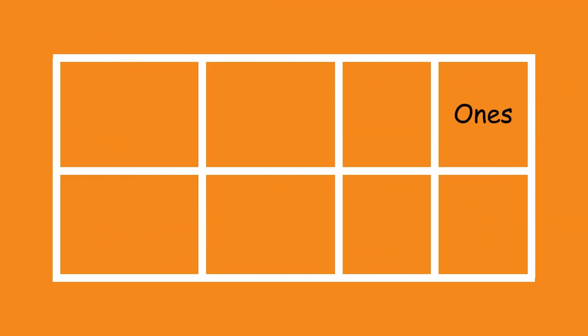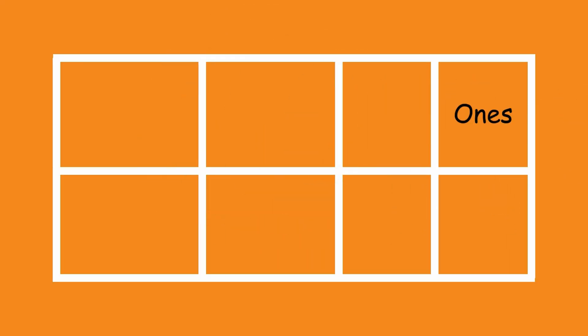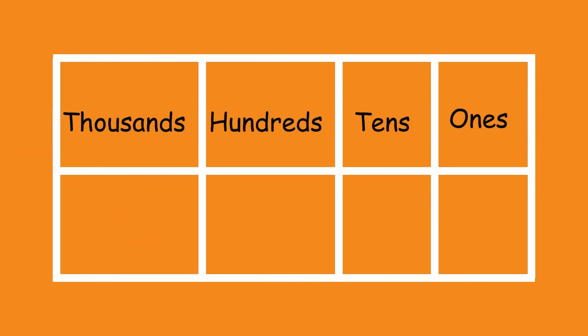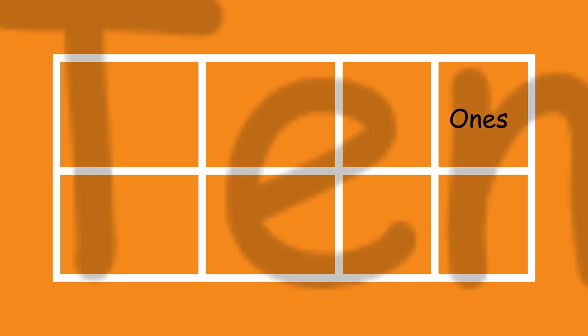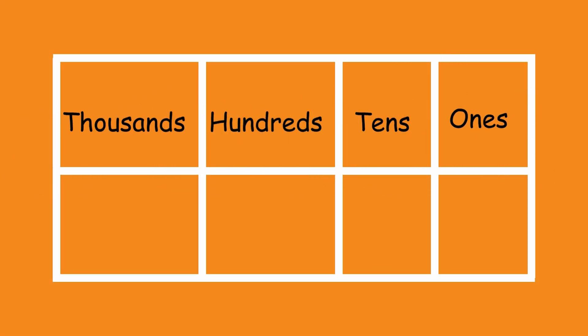Imagine numbers as cars parking in special spots. Each spot has a name and gives the digit a value. The spots we use are ones, tens, hundreds, and thousands, and so forth. The ones place means single units, the tens place means groups of ten, the hundreds place means groups of 100, and the thousands place means groups of one thousand.